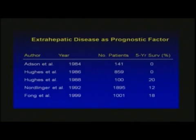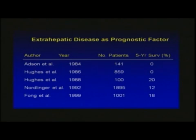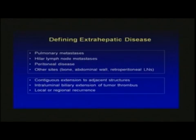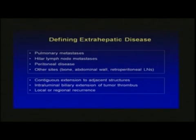Historically, on the description of extrahepatic disease as a prognostic factor, there have been studies as remote as the report by Hughes in 1986 and others that have really promulgated the concept that if extrahepatic disease is present, most patients don't survive a long time. Now, regarding definitions — if you look at some of these older studies, even those that advocated using extrahepatic disease as a prognostic factor, we need to think about how they're defined. Many studies, including some staging systems, incorporated the presence of tumor directly extending into adjacent structures as extrahepatic disease, or intraluminal biliary extension, or regional local recurrence of the colon cancer.